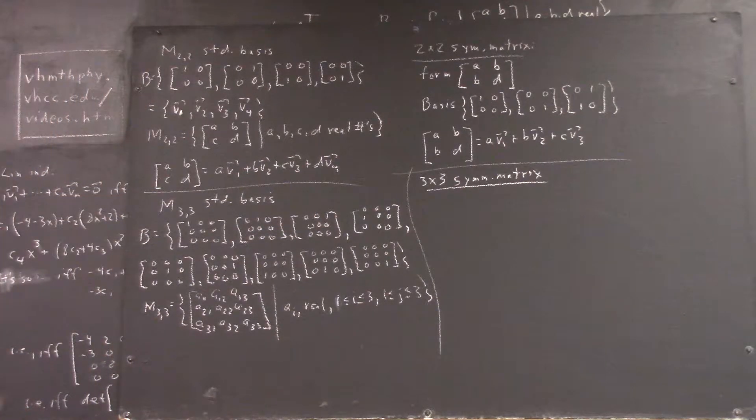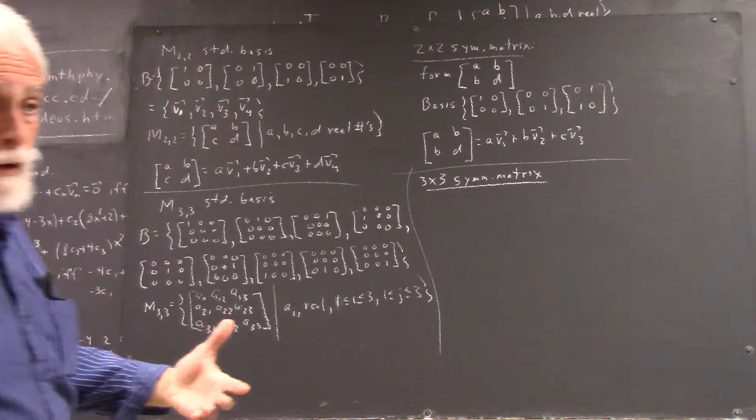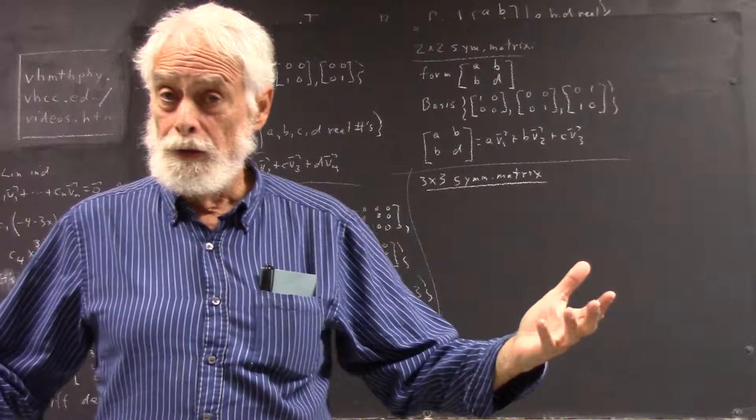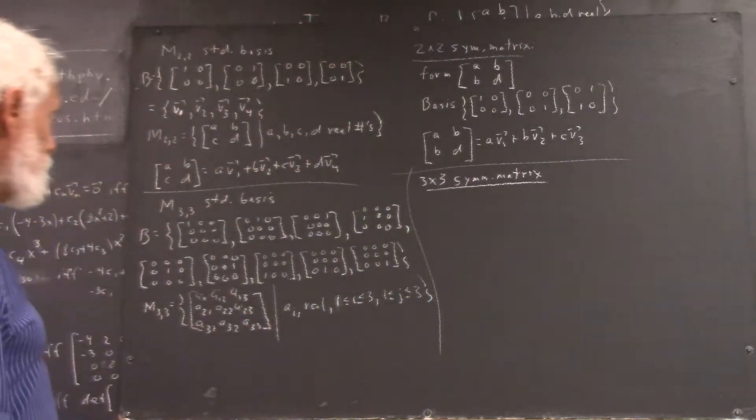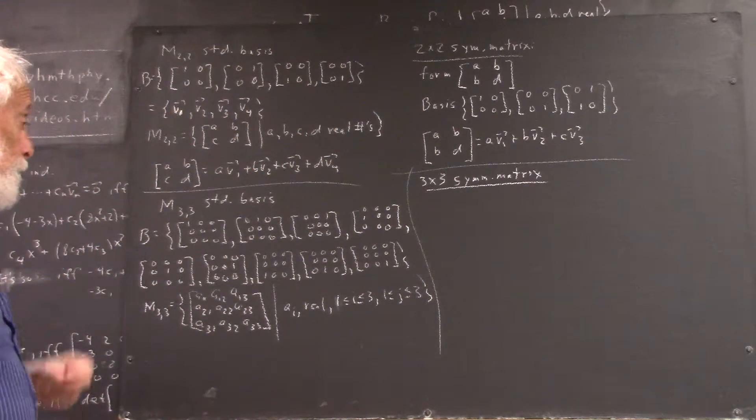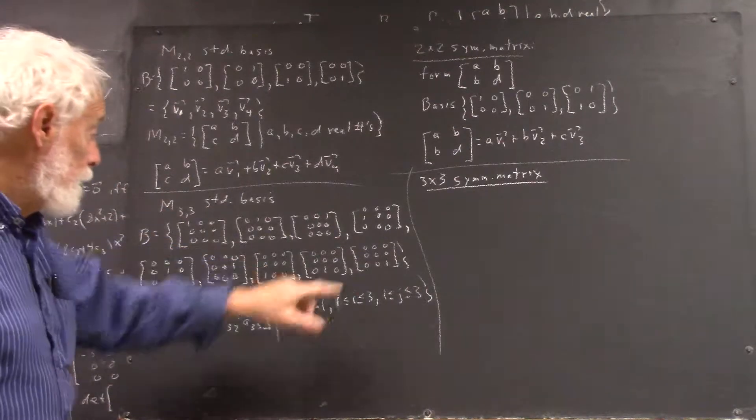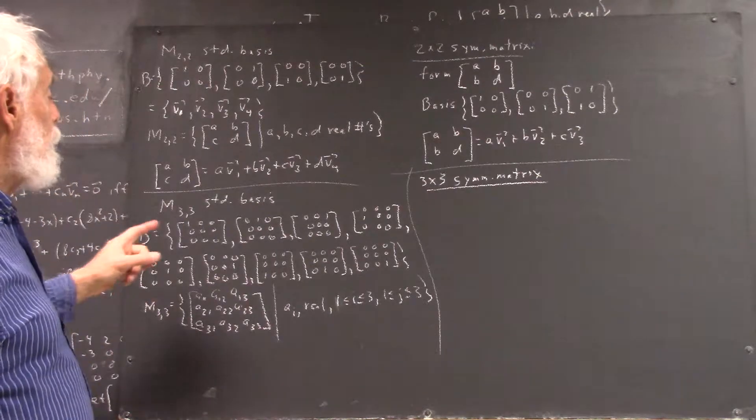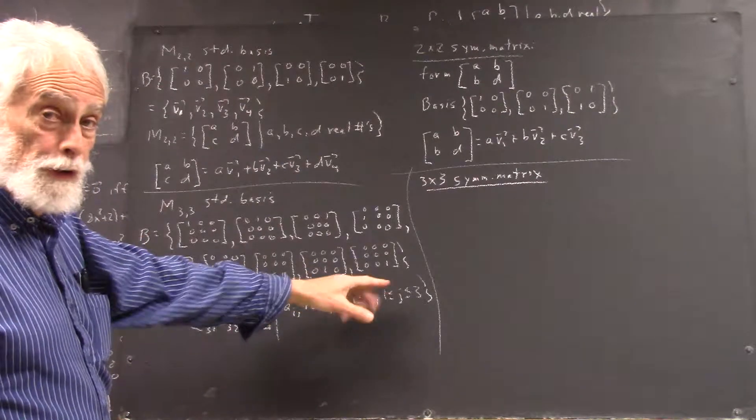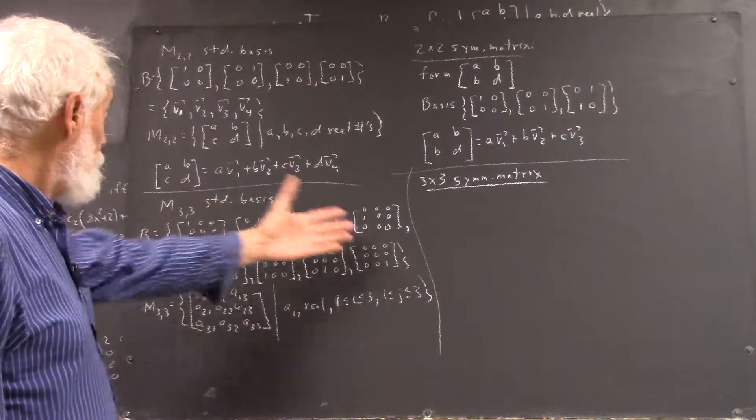Now, we want to imitate this for M33. What's the standard basis for M33? Well, you probably looked at it, but you should be able to list that standard basis. You should be able to visualize it in your head, and you should actually know it at this point because it's been assigned. So here we have it, and it's, I think, self-explanatory. We just have a 1 in each possible position, 0s everywhere else. There are 9 possible positions, so there are 9 of these.